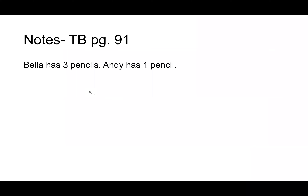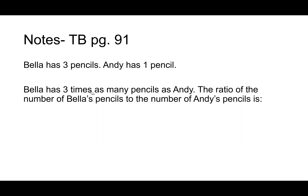Bella has three pencils, Andy has one pencil — Bella has three times as many pencils as Andy. The ratio of the number of Bella's pencils to the number of Andy's pencils is three to one. When we read ratio word problems, we want to make sure we know what we're comparing to what, because a ratio reversed is not the same ratio.